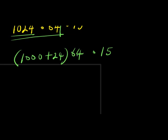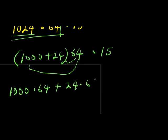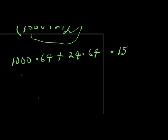So what I'm going to do will be to multiply this here. So I'm going to have 1000 times 64 plus 24 times 64, then I have times 15. 1000 times 64 plus 24 times 64.